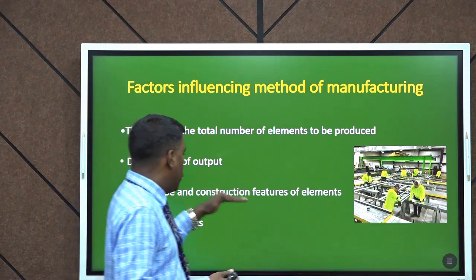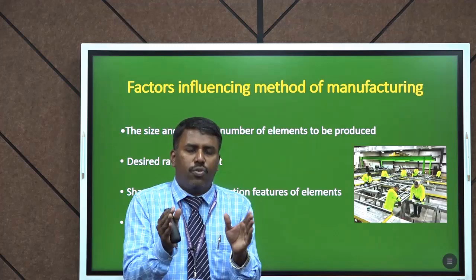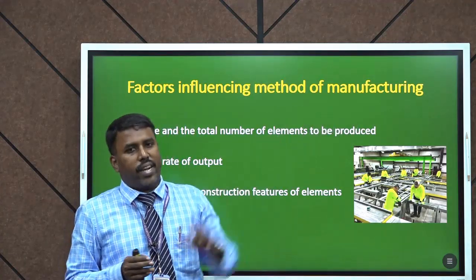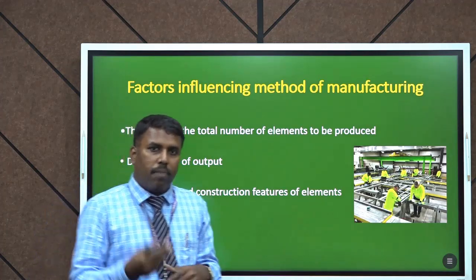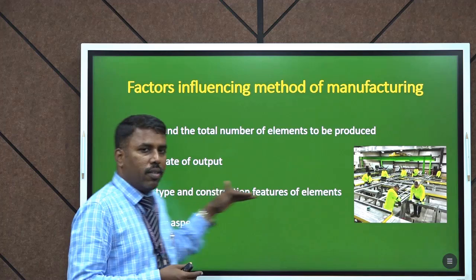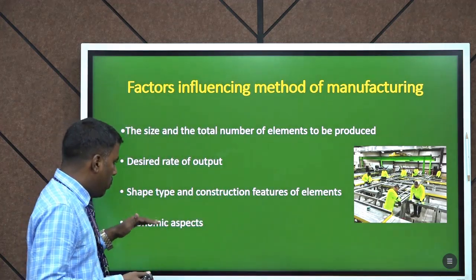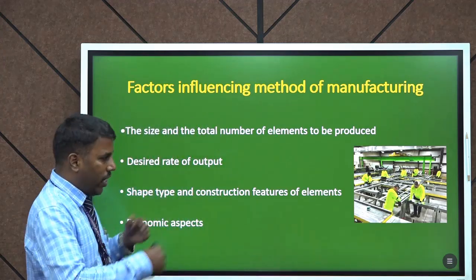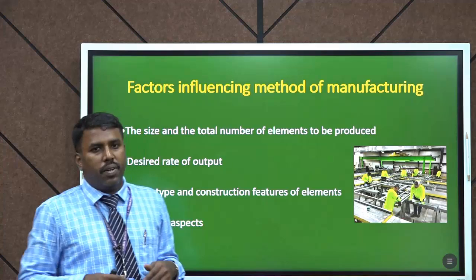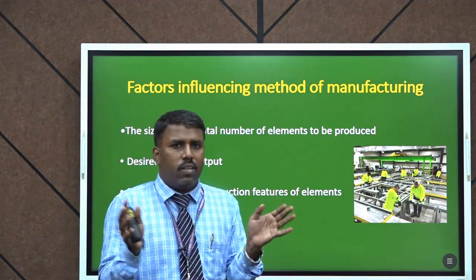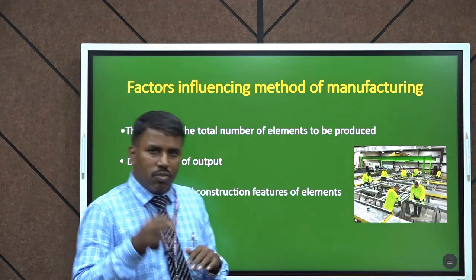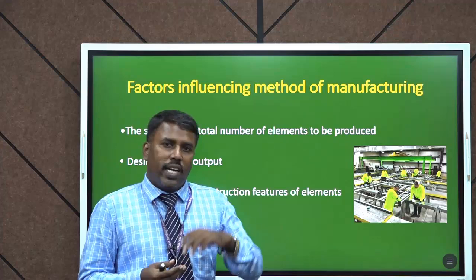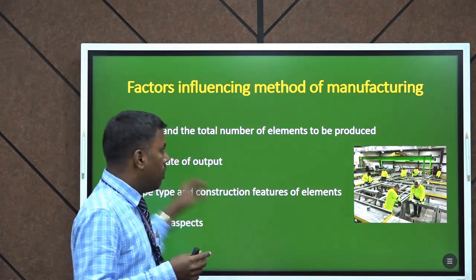The next factor is the shape and features of the elements. If you need any complicated shape, that may not be possible at the site, because skilled labor and a controlled environment are available at the factory. The next factor is economic aspects. If you want a continuous process, we can prefer the conveyor system. If you do not want large quantity, then we can prefer the stand system. Based on our needs and output, the manufacturing methodology will vary depending on the location and construction process.